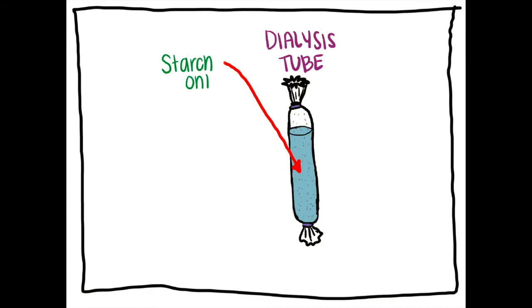Now, we can make sure that the enzyme is what caused the simple sugars to leave the tube by using a new dialysis tube, but this time we're not going to use the enzyme.